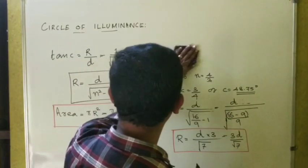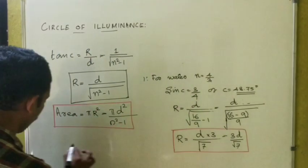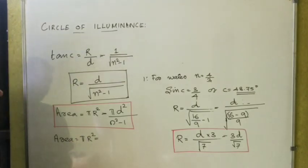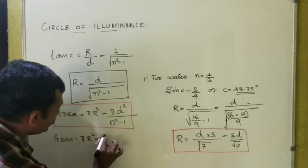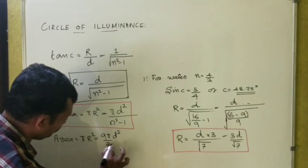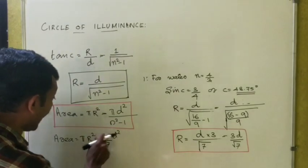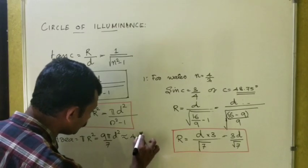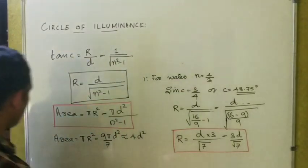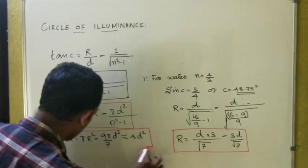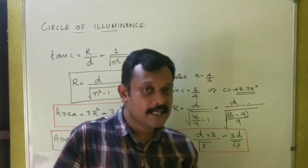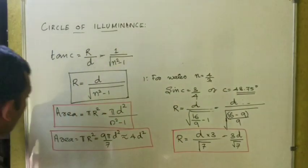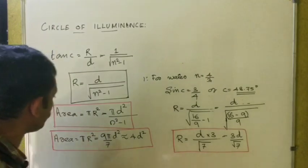The area of the circle of illuminance for water is πR² = 9πD²/7, which is approximately 4D². For glass, N = 3/2. Then R = D / √((3/2)² − 1) = D / √(5/4) = 2D/√5. The area is πR² = 4πD²/5 ≈ 2.5D².